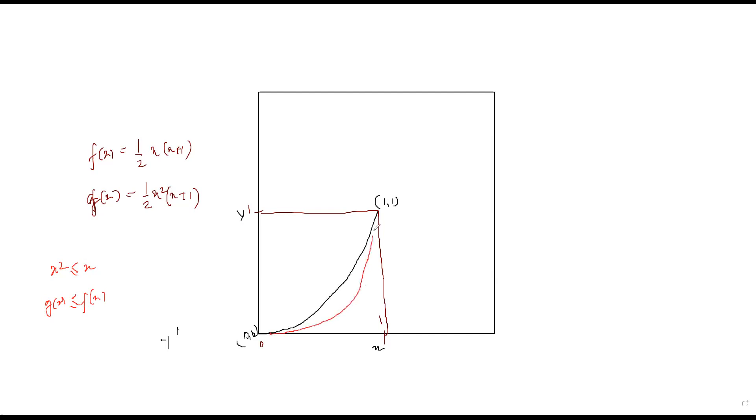So the red curve is g(x) and the black curve is f(x). That's pretty beautiful. This is the idea of curve sketching you're incorporating in this whole thing.